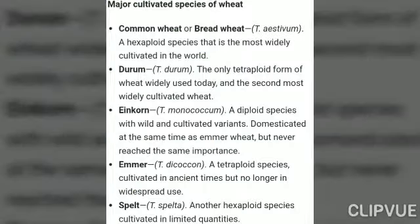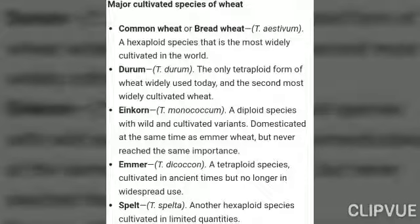Triticum compactum is a major cultivated species. Triticum aestivum is known as common wheat and bread wheat. It is a hexaploid species where 2n = 6x = 42, and it is the most widely cultivated in the world.